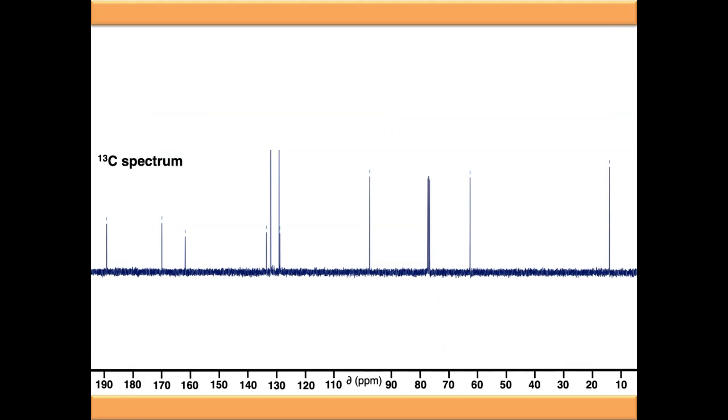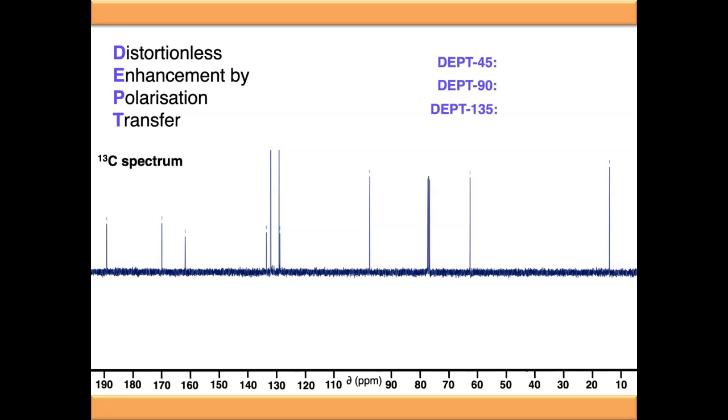This concept of carbons coupling with protons allows us to run pulse sequences which tell us a lot more about a molecule than just the carbon-13 spectrum alone. These experiments are called DEPT—distortionless enhancement by polarization transfer—and they come in a number of different flavors. The most common ones are DEPT45, DEPT90, and DEPT135. What they're going to do is allow us to differentiate how many protons are attached to each of these carbon signals—whether they're quaternary carbons where there's no protons attached, or CH, CH2, or CH3 signals.